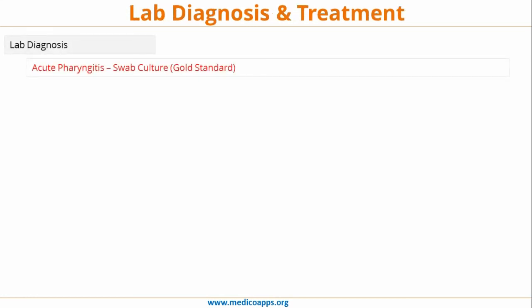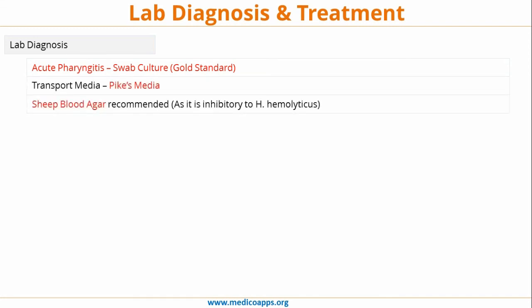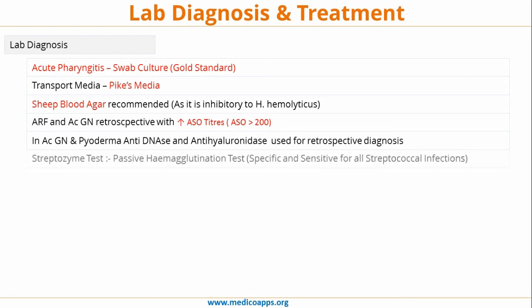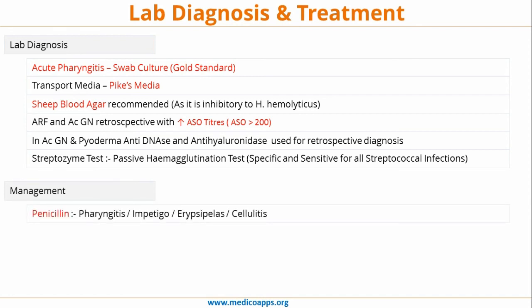For lab diagnosis: in acute pharyngitis, swab culture is the gold standard. The transport media is Pike's media and sheep blood agar is recommended as it is inhibitory to Haemophilus haemolyticus. Acute rheumatic fever and acute glomerulonephritis can be diagnosed with a retrospective increase in ASO titers more than 200. In acute glomerulonephritis with pyoderma, anti-DNase and anti-hyaluronidase are used for retrospective diagnosis. The streptozyme test is a passive hemagglutination test which is specific and sensitive for all streptococcal infections.